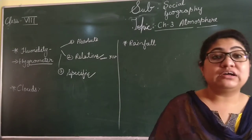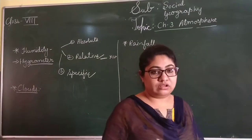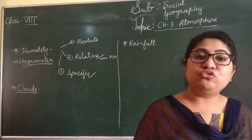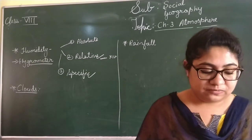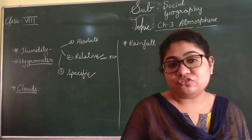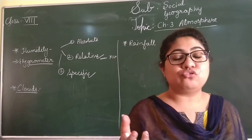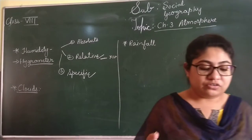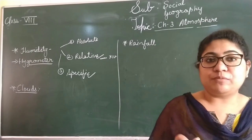Now we talk about clouds. You know that there are white-coloured and sometimes grey-coloured clouds in the atmosphere. Because of the clouds, rainfall occurs. Clouds are masses of small water drops or ice crystals formed by the condensation of water in the atmosphere. When the water vapour rises up, they start collecting and form clouds, usually at a considerable height above the earth's surface.